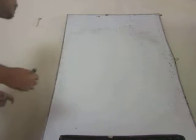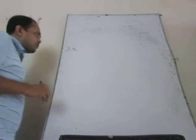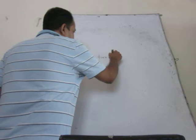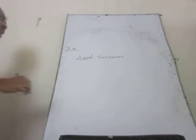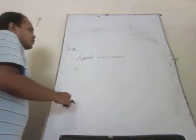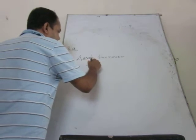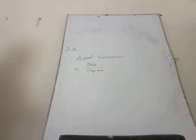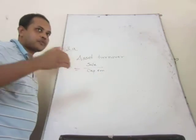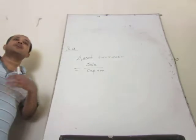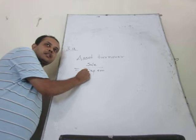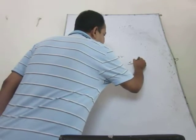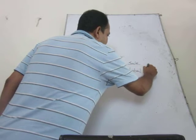Under this efficiency ratio segment, the first ratio — this is 3A — we discuss the asset turnover ratio. Last class we discussed that this asset turnover ratio means sale to capital. The asset turnover ratio means here we try to measure the efficiency of investment in capital to generate the sale, or how efficient the company is in generating sale by investing per dollar in capital investment. This ratio can also be calculated by sale to total asset.